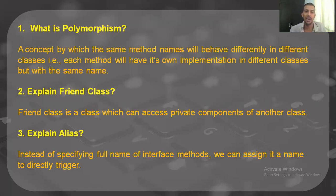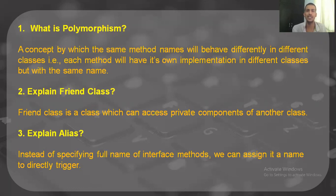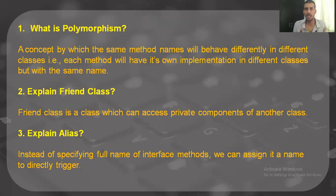Next: explain friend class. A friend class is a class which can access the private components of another class. These private components are not accessible to all classes, so if you want to access a private class, you have to use a friend class.